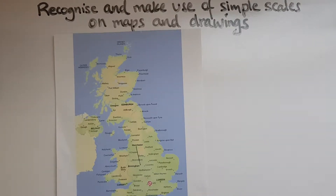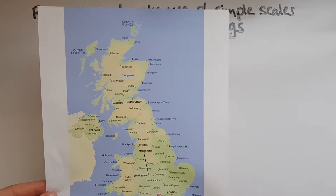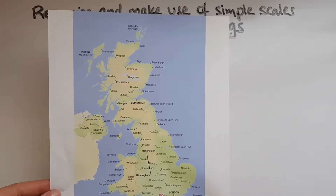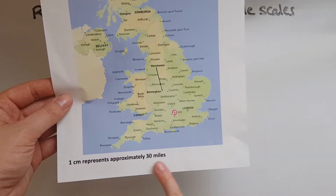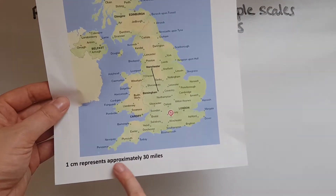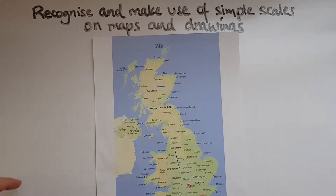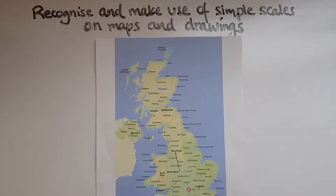In this video we'll learn to recognise and make use of simple scales on maps and drawings. I've got a map printed off the internet and I'd like to use it to work out the straight line distance between different cities. The scale at the bottom says one centimetre represents approximately 30 miles, so that is the scale or ratio that tells us one centimetre on the map is 30 miles in actual distance.